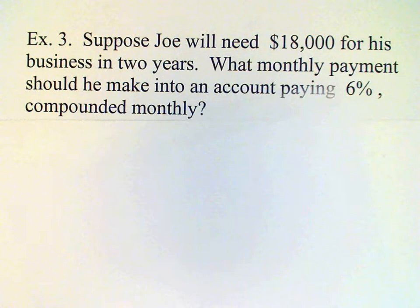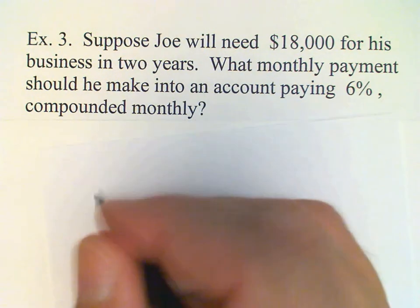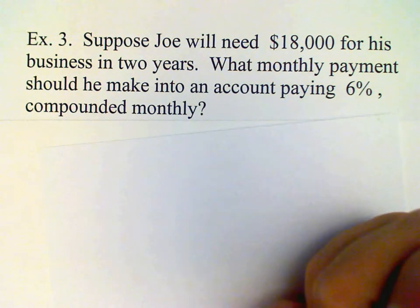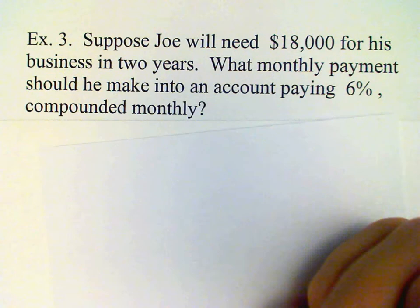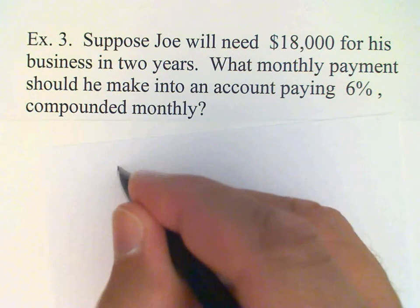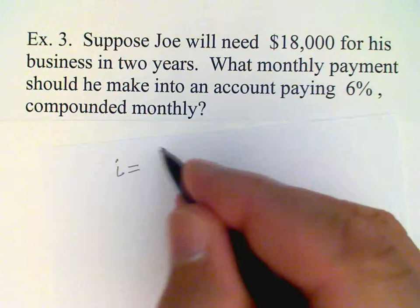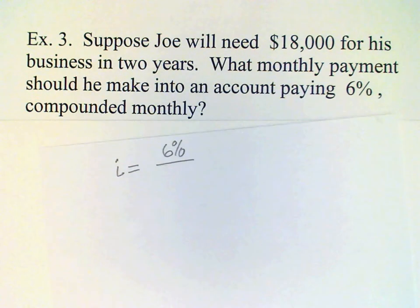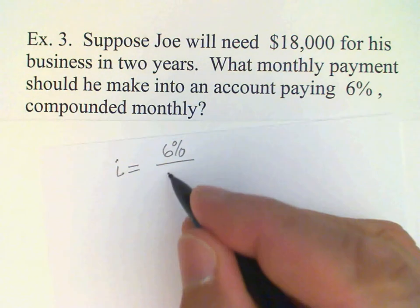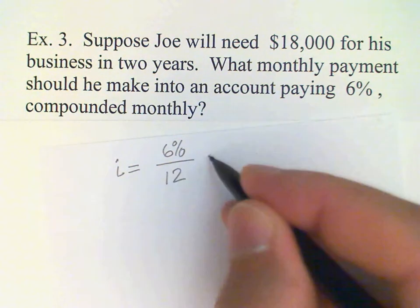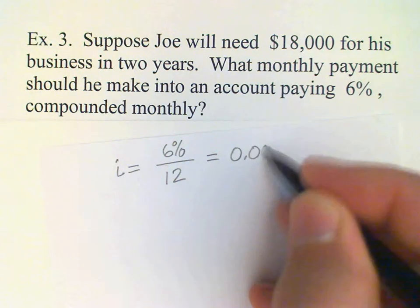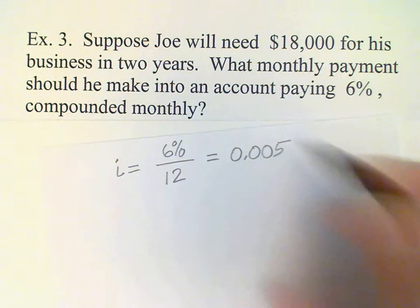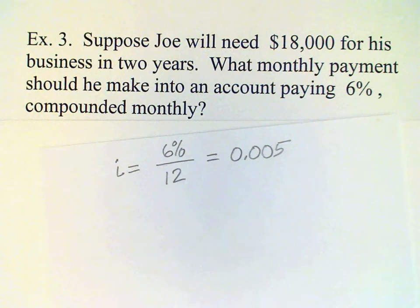We're just going to use that sinking fund formula which is the annuity formula rearranged. Again, we're going to need to know i and n. So i is going to be that 6% and again we're making monthly payments so we're going to divide by 12, and this is the same monthly interest rate that we came up with in the previous example.